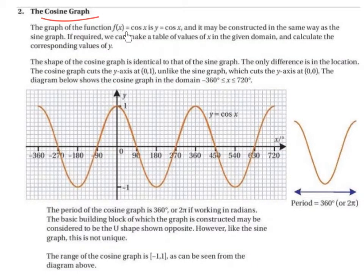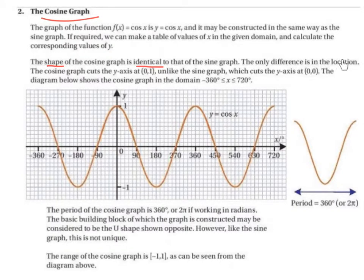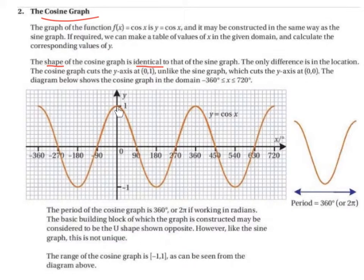The cosine graph. The graph of the function f of x equals cos of x is y equals cos of x, and it may be constructed in the same way as the sine graph — by making a table of values of x in the given domain and calculating the corresponding values of y. The shape of the cosine graph is identical to that of the sine graph; the only difference is in the location. The cosine graph cuts the y-axis at (0, 1), unlike the sine graph, which cuts the y-axis at (0, 0). The diagram below shows the cosine graph in the domain from minus 360 degrees up to 720 degrees.